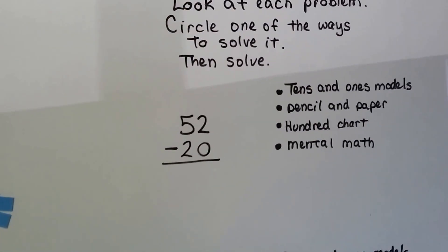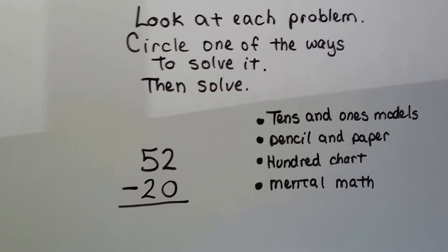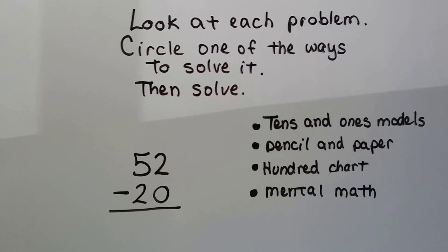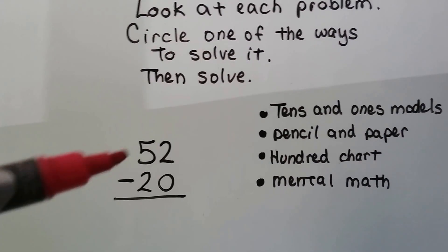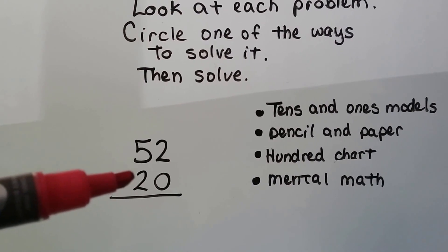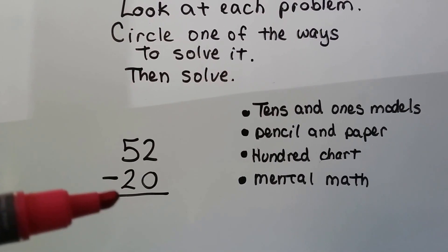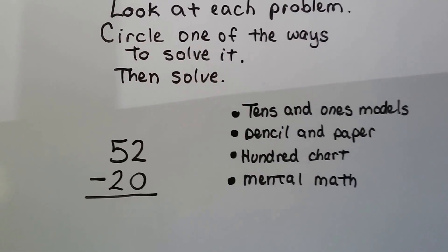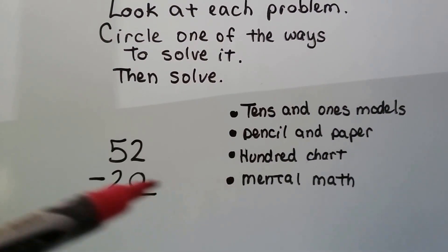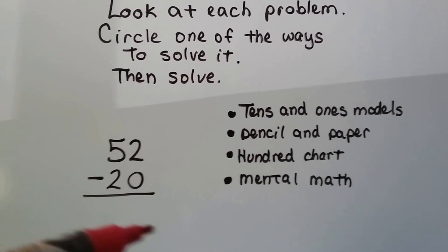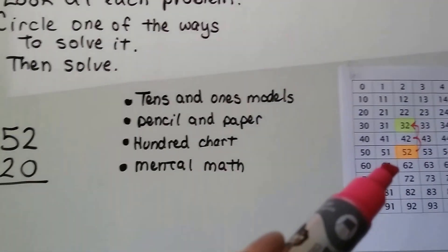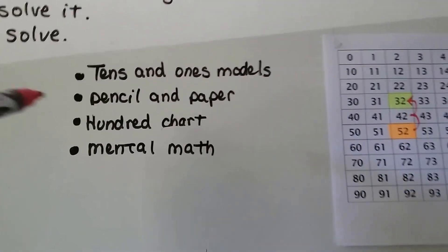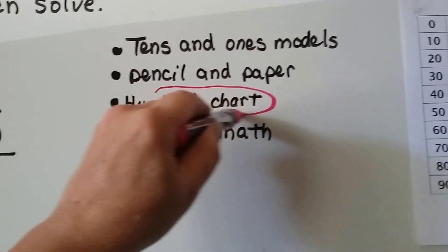Now let's look at each one of these problems. We need to circle one of the ways to solve it and then solve it using that way. We have 52 minus 20. Well, we're taking away two tens. So maybe it would be easy to do mental math and just take the two tens away from the five tens or to use a hundred chart. We can use a hundred chart. That'll be our choice for this one.